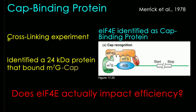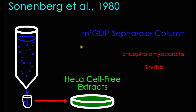They did this by performing a cross-linking experiment. In summary, they identified a small 24 kilodalton protein that did bind specifically to this M7G cap at the 5' end of the mRNA, and not to any other guanines present in solution. This raised the final question: does this cap binding protein — later called EIF, or eukaryotic initiation factor — actually impact the efficiency of translation, or is this a random finding?